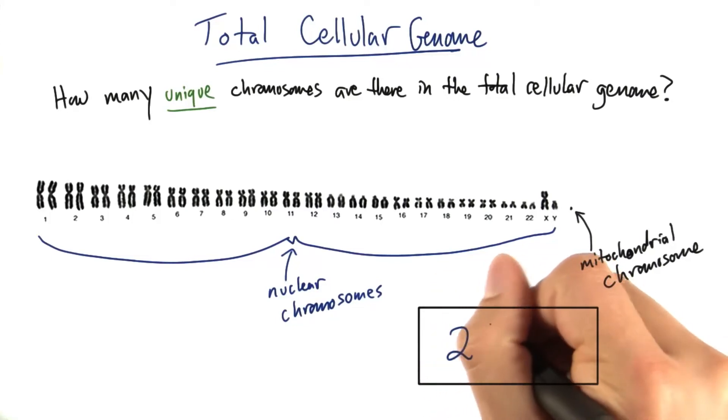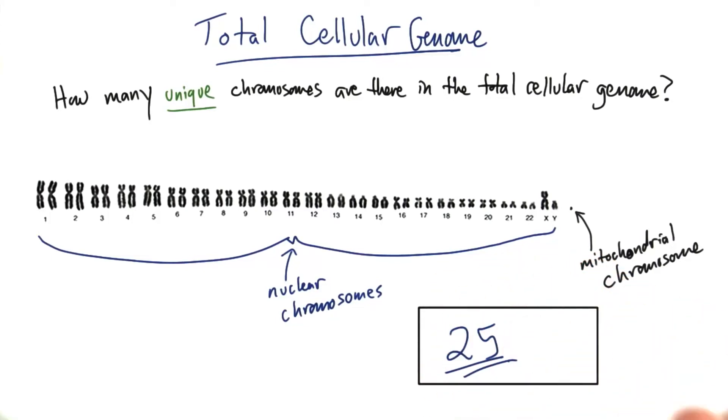The answer to this question is 25 unique chromosomes in the total cellular genome. What I wanted you to do was look at our nuclear and mitochondrial chromosomes.